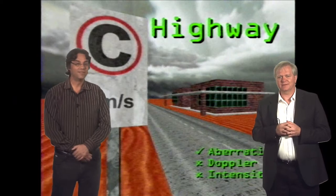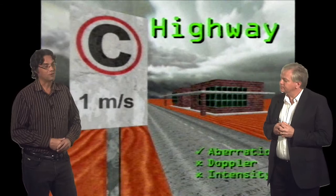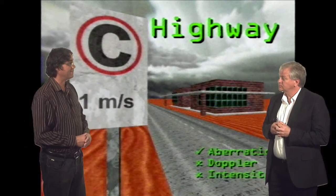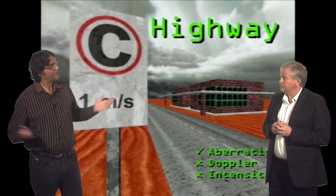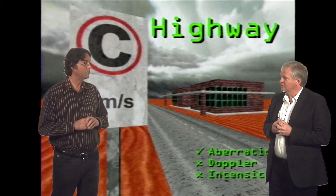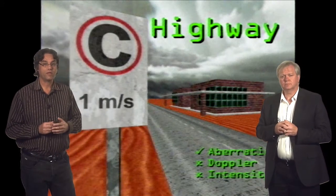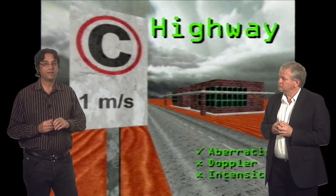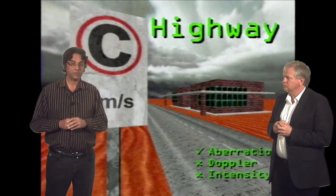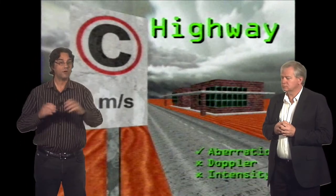This is what I call the desert road simulation. This is an artificial world, sort of like a computer game world, in which we've artificially made the speed of light one meter per second. So instead of being 300,000 kilometers per second, it's just one meter per second. Apart from that, everything is physically correct. We're going to start from rest and keep accelerating down that road and look at what happens.